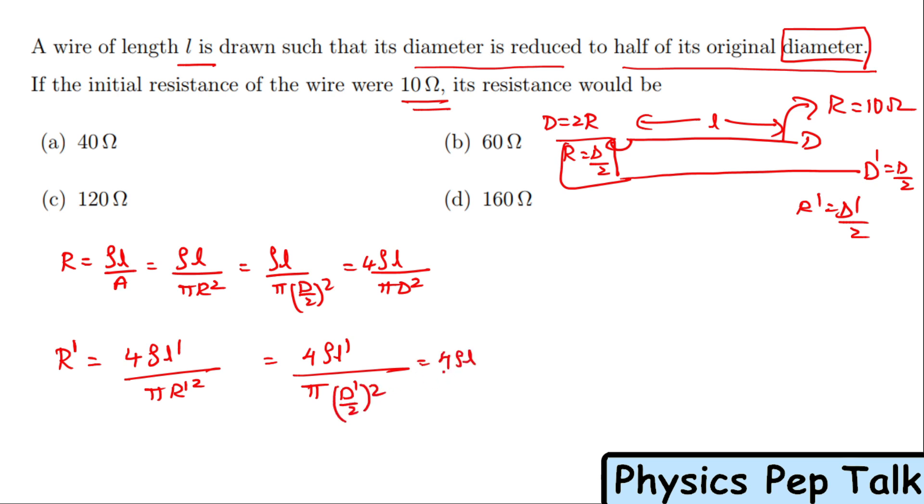This becomes 16ρL'/(πD'²). Now D and D' relation: we know D' = D/2. So this becomes 16ρL'/(π(D/2)²). D/2 squared becomes D²/4, so divided by 4 becomes times 4, giving us 4 in the numerator.